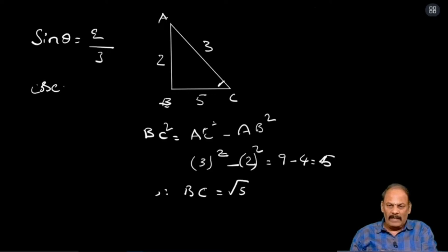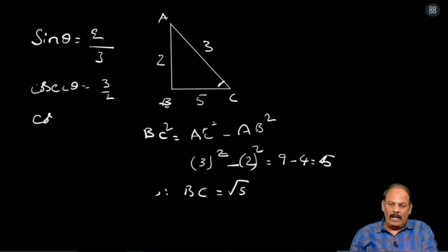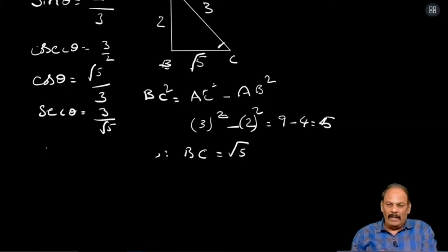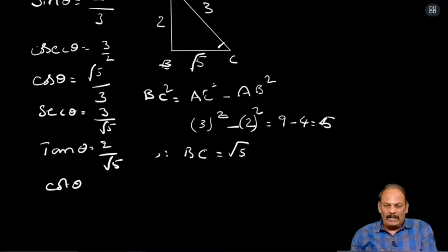Next, cosecant theta — that is the reverse of sine, so it equals 3 by 2. Cos theta: the definition of cos theta is adjacent side by hypotenuse, that is root 5 by 3. Secant theta means reverse of cos, that is 3 by root 5. Tan theta means opposite side by adjacent side. Cot theta is reverse of tan, that is root 5 by 2.